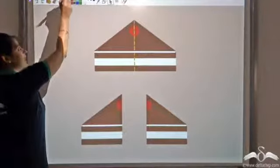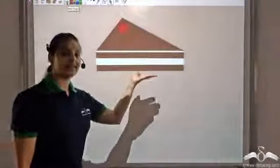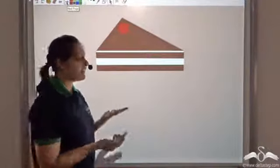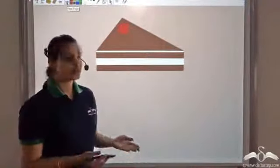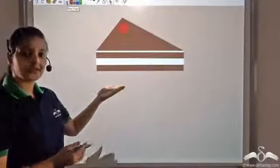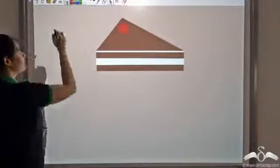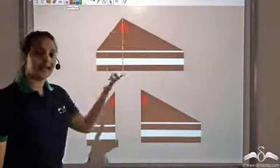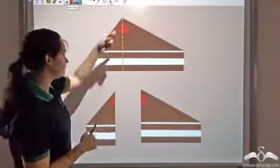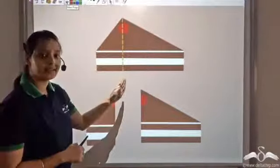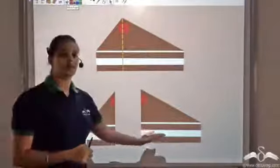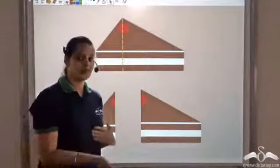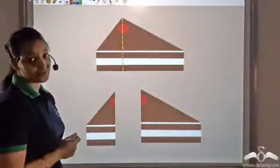Now let us assume that the last pastry looked something like this — a different shape. Again they would fight unless they get an equal share. So how can we divide this pastry into two equal parts? If they try to cut it like they had previously done, that is draw a straight line from a vertex, they get two parts — but clearly these two are not equal, so the fight would remain.